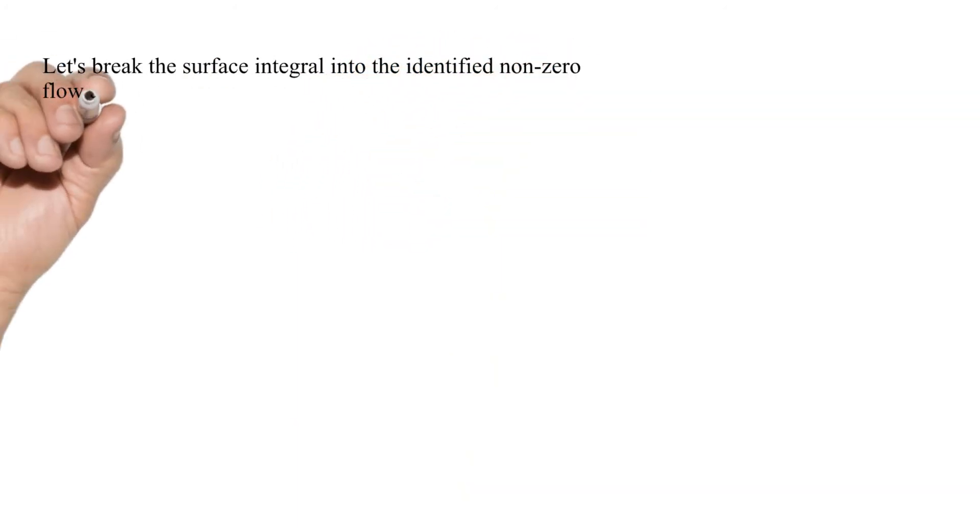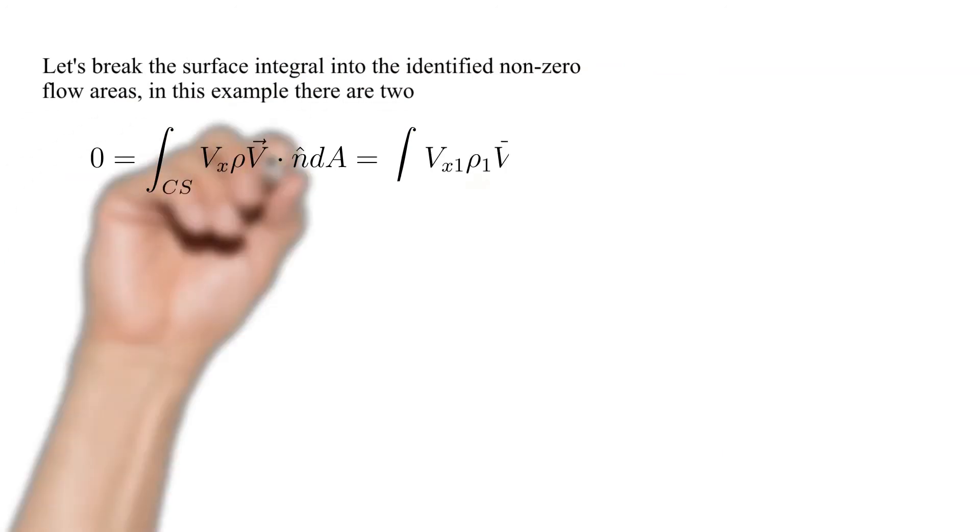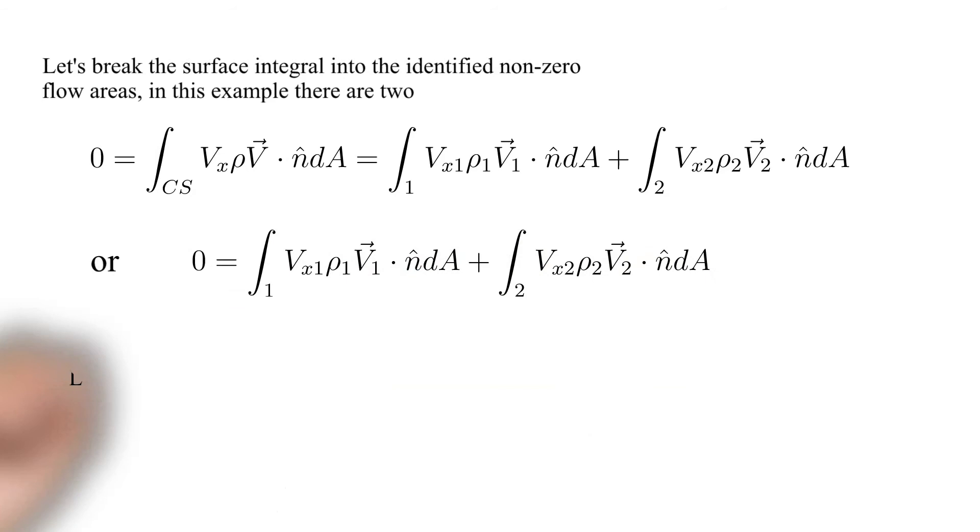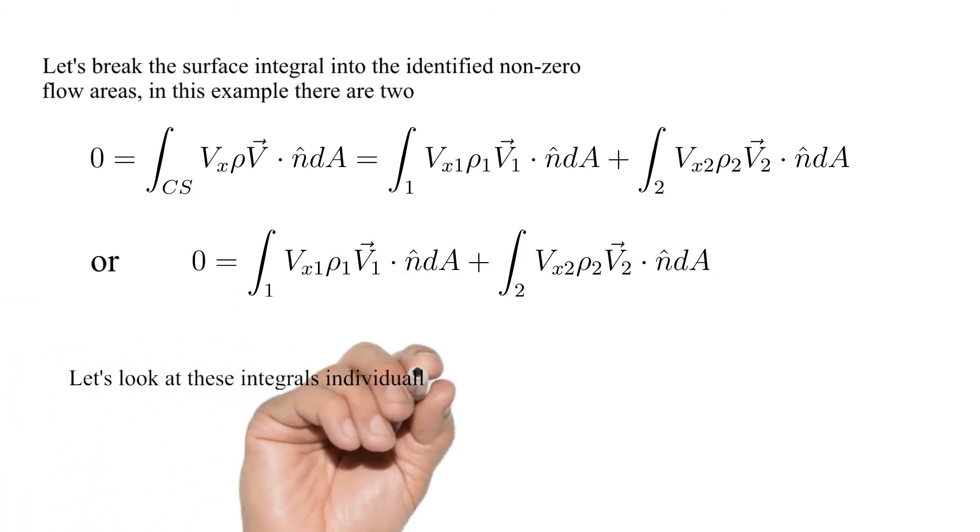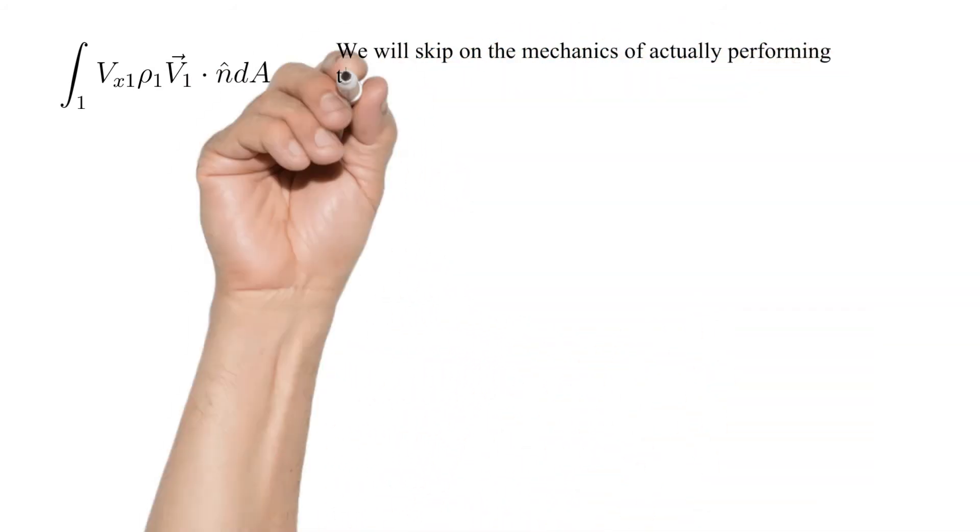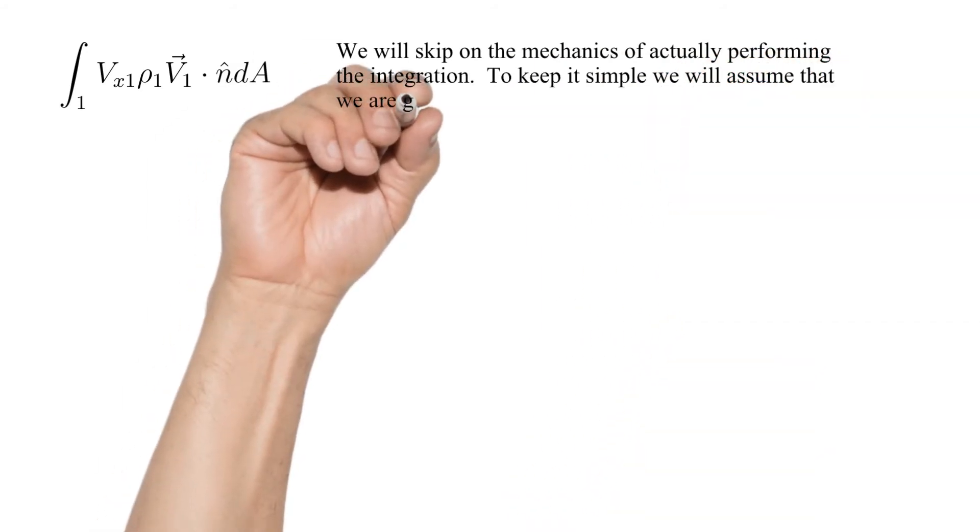Let's break the surface integral into the identified non-zero flow areas, in this example there are two. These are shown here. Next let's look at the first of these integrals individually. We will skip on the mechanics of actually performing the integration. To keep it simple we will assume that we are given uniform velocities.